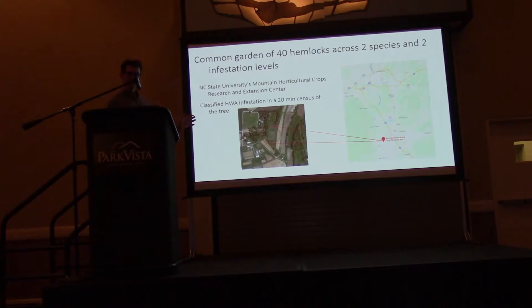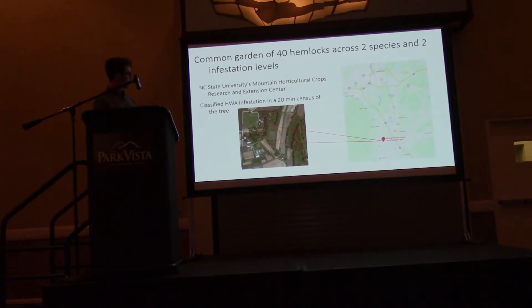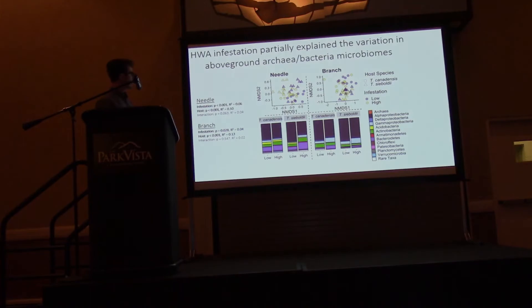Unlike most of the presentations today, we did not conduct this in Great Smoky Mountains National Park, because we wanted a common garden approach — planting different hemlock species all in the same area, since soil characteristics can influence the plant microbiome. We conducted this at NC State's Horticultural Research Center outside of Asheville. Some of these trees had hemlock infestation and some did not, growing right next to each other. So we looked at the difference in the microbiome between trees with high infestation and low infestation at the same location.